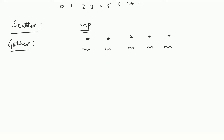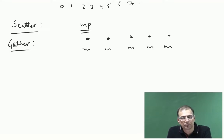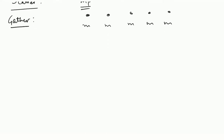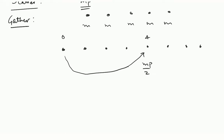How will you implement scatter? Can we use recursive halving? Let us try to understand. Let us assume 8 nodes again. In the first iteration, node 0 is going to send data to node 4. It is going to send exactly mp by 2 elements. It has mp elements in the beginning and is going to send half that data to node 4.